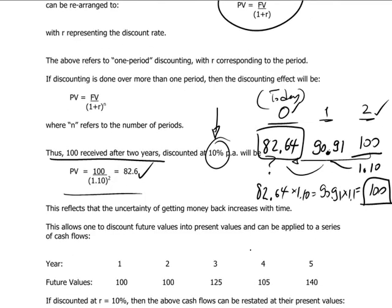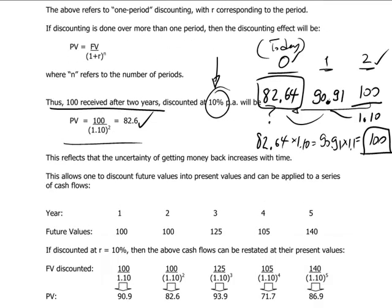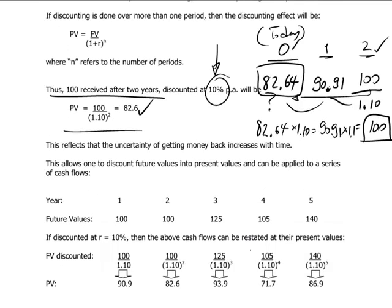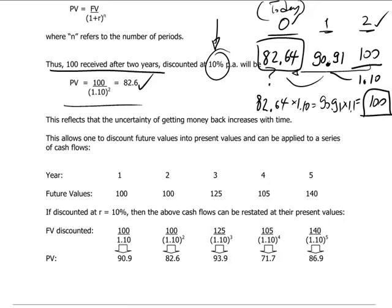Now this discounting process is very important. Why is it important? Because it allows us now to discount future cash flows and to adjust them for the time difference and the time delay in receiving money. And we can relate it all back to a present value.